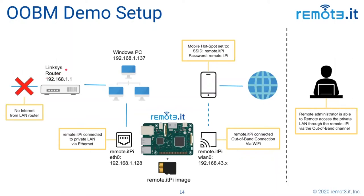On the LAN side I have a few clients: a Windows PC, and the Remote.it Pi that I set up per the instructions. I've connected that Pi via Ethernet cable to the router, and I've also got an Android phone here with the correct SSID and password set up so that Pi booted and joined it.